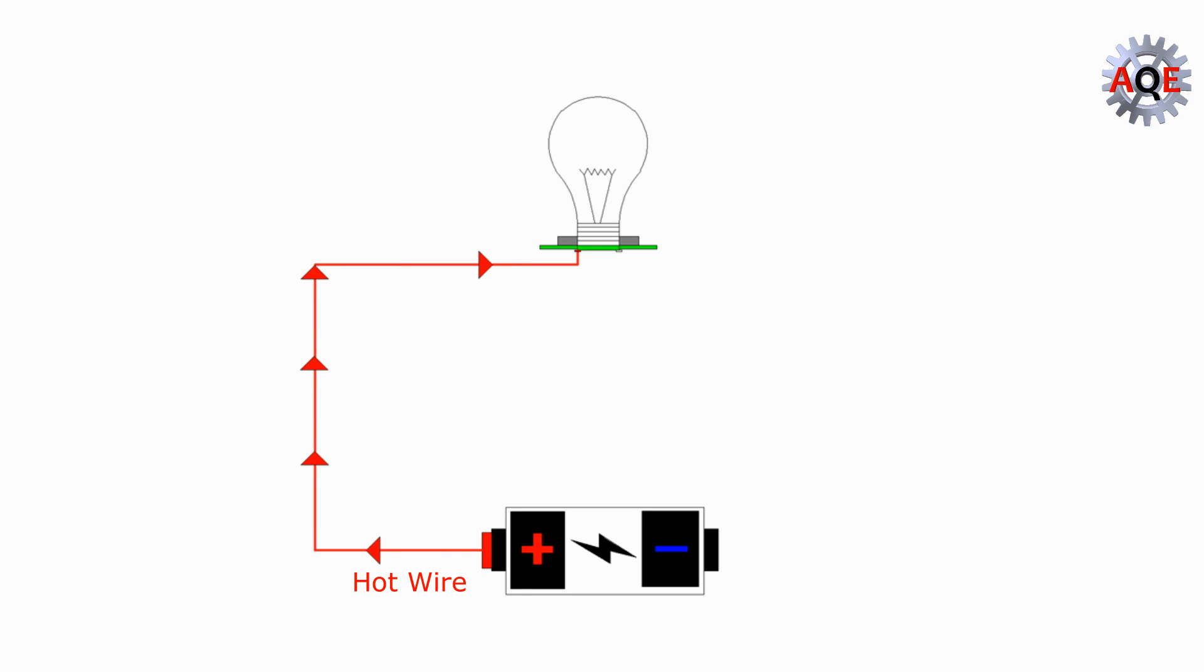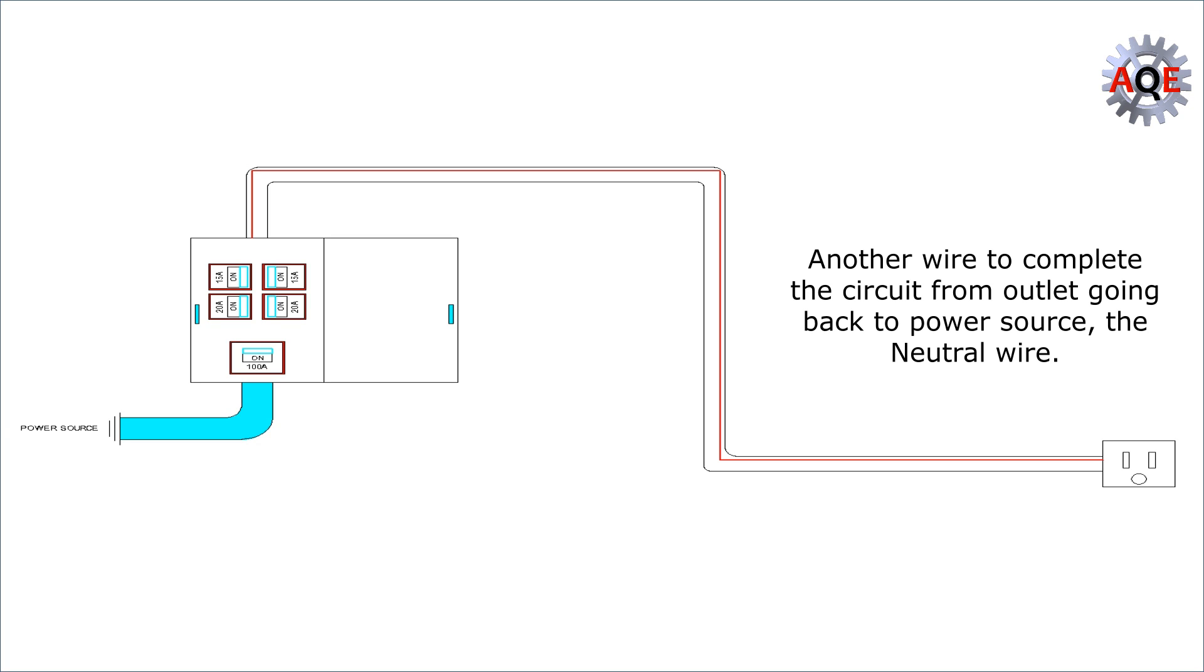Once hot wire has initialized the beginning of a circuit, there must be another wire to complete the circuit. This role is filled by neutral wire.